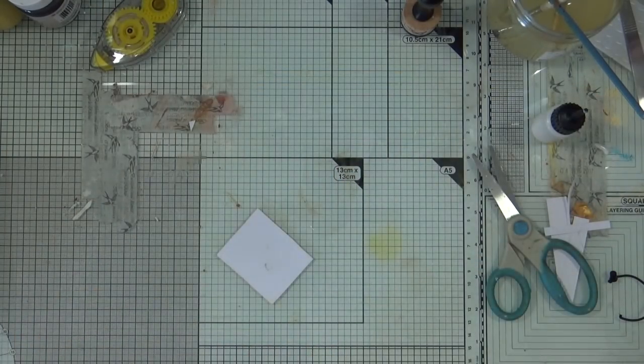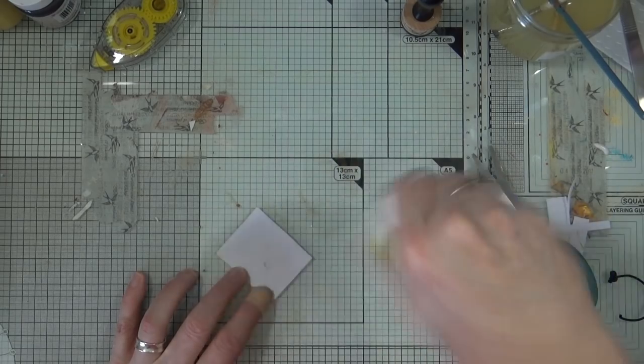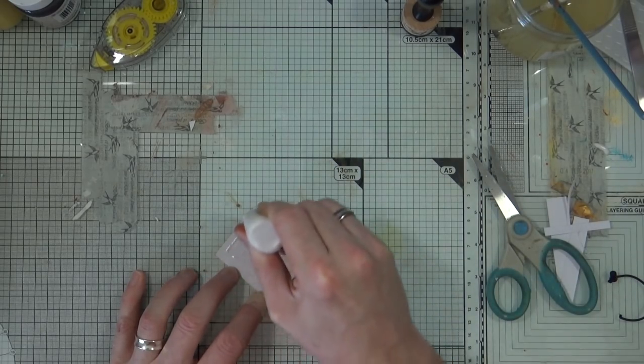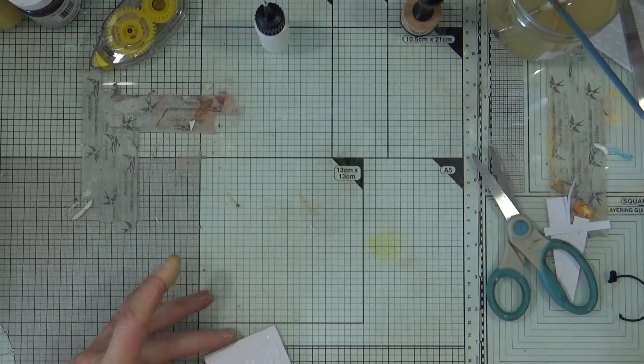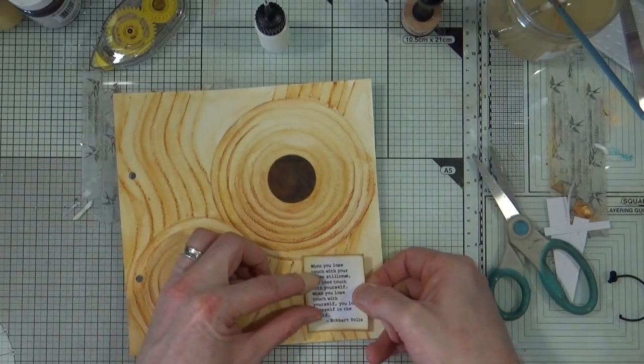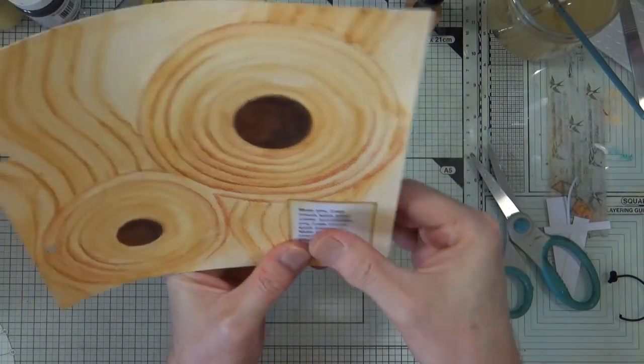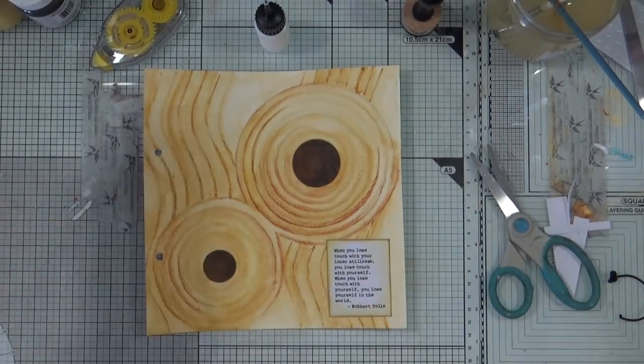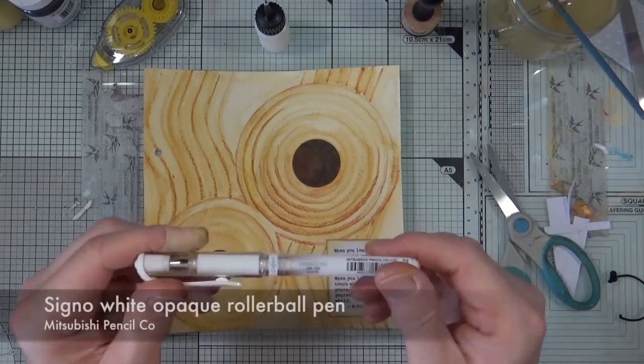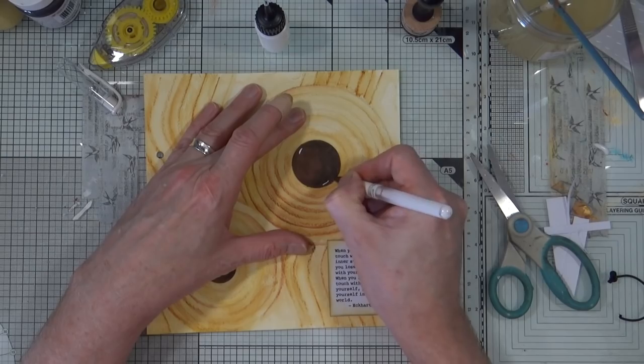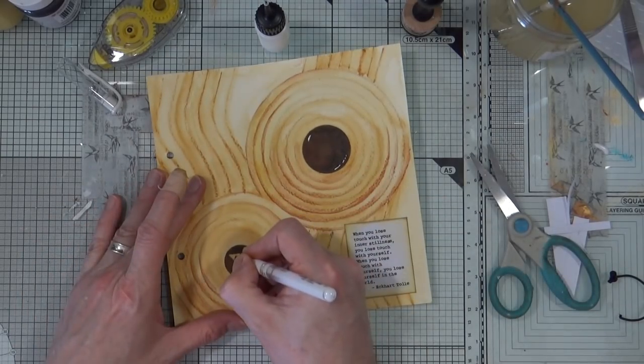I'm now just going to glue that down onto my page again using the craft PVA glue. Making sure that I've got it into the right position and it's straight. I'm going to bring out my white roller ball pen, my Signo white opaque roller ball pen, and I'm just going to add some little highlight details to my rocks.